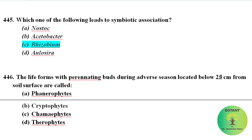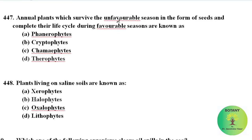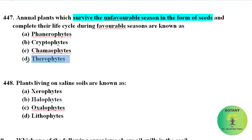Life forms with perennating buds during the adverse season located below 25 cm from the soil surface are called cryptophytes. Annual plants which survive the unfavorable season in the form of seeds and complete their life cycle during the favorable season are known as therophytes.